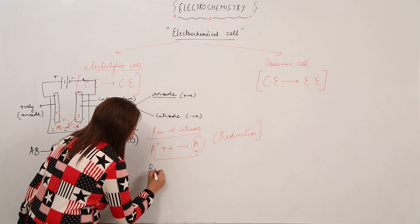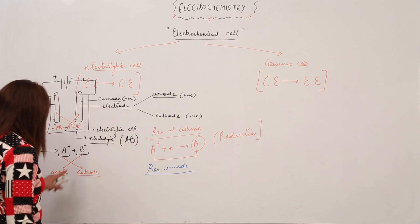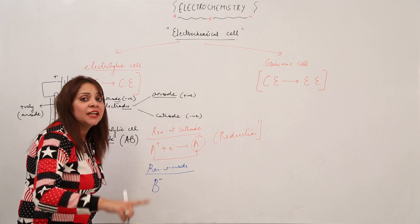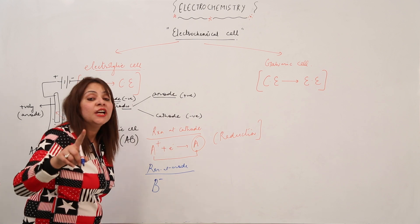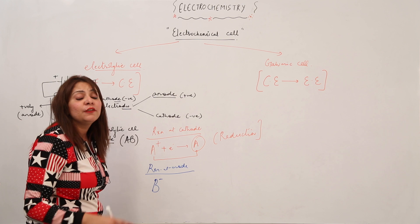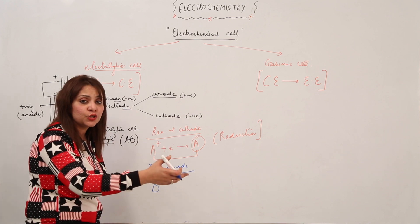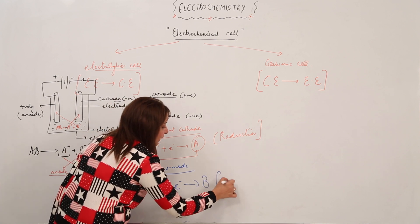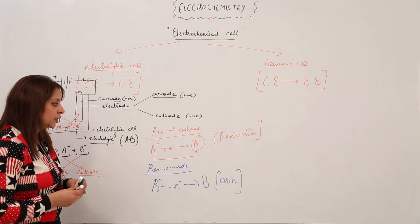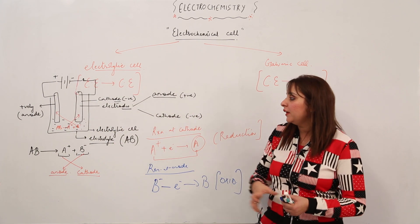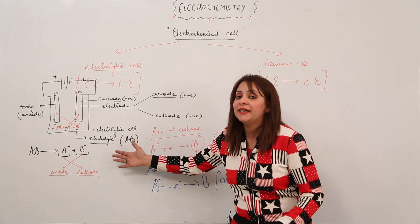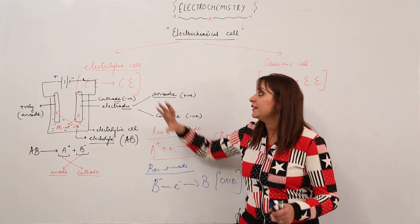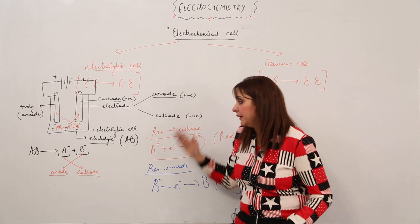At the anode, B⁻ migrates. B is negatively charged because it has gained one electron. At the anode it will give back that electron, leading to the formation of B atom. This loss of electron is oxidation — so oxidation occurs at the anode. As you can see, we first pass electric energy and this leads to the conversion into chemical energy, confirming that the electrolytic cell deals with the conversion of electric energy into chemical energy.